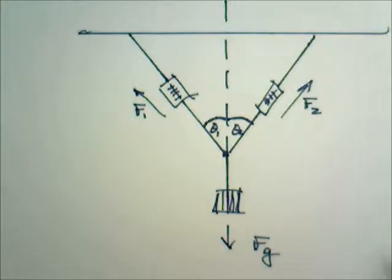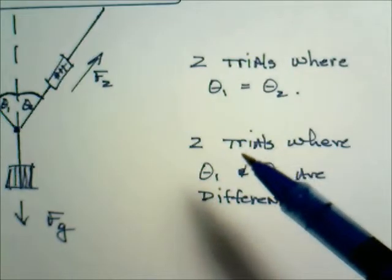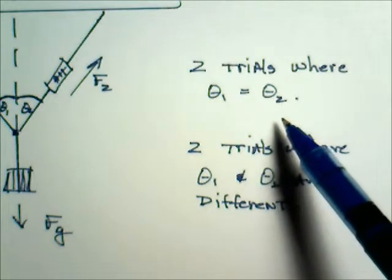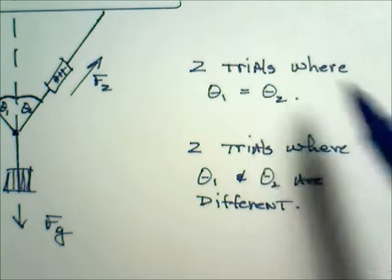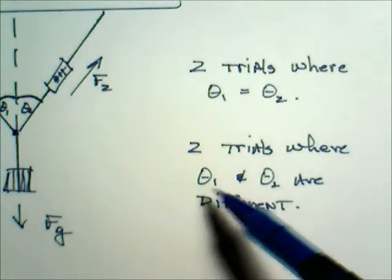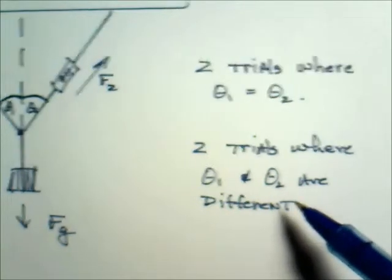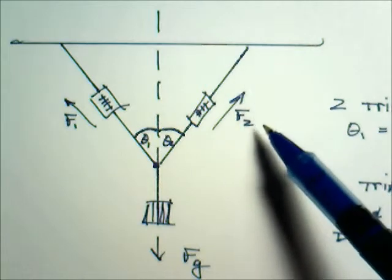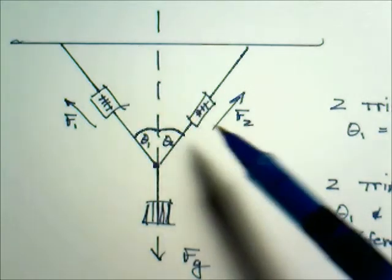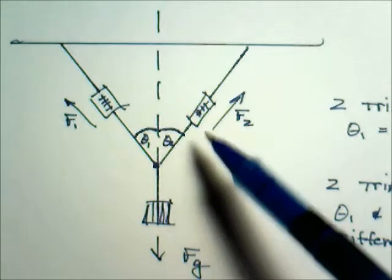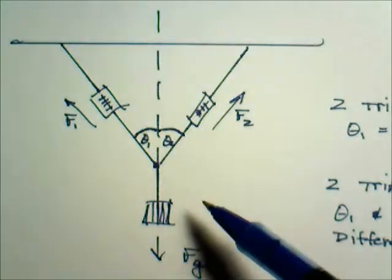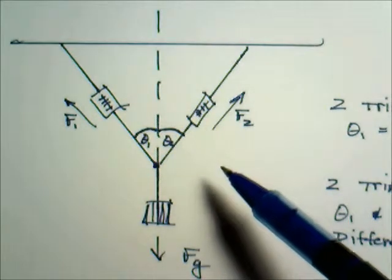We are going to do this several times. So I would like us to do at least two trials where theta1 and theta2 are the same. And at least two trials where there are different angles. So you can adjust this so that you can pull it down a little bit. Pull this one up a little bit and clamp these spring scales off with some finger clamps and then you can work out exactly how you are going to do that.